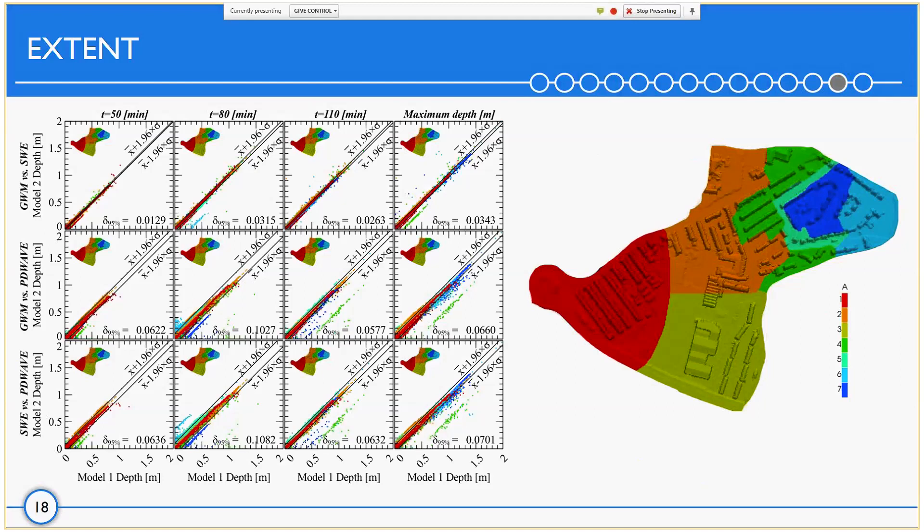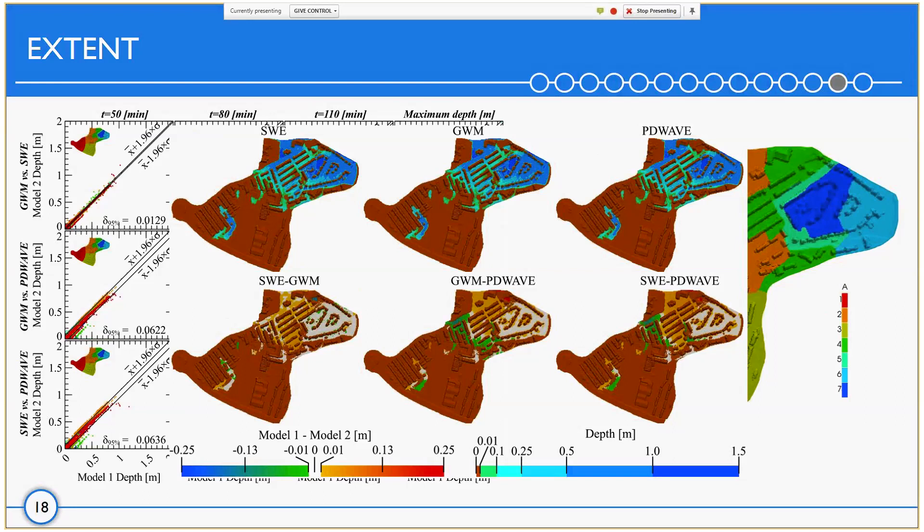For the maximum depth obtained at each cell, the areas with major differences lie in the area 4, 6, and 7 for all models. Despite the small differences, the agreement between all models is still very good. This is visible in the image where the maximum extent is shown, and the difference is highlighted. The values for the differences between, for example, shallow water and gravity wave are in the vast majority less than 2 centimeters. For the difference between the other two models and PD wave are still below 10 centimeters globally. So there isn't much difference, and the extent is approximately the same.